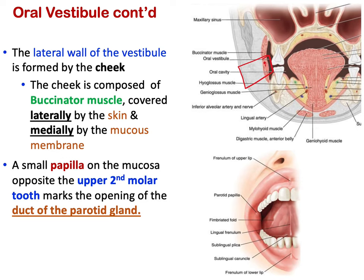In coronal section, the cheek is composed mainly of the buccinator muscle. The buccinator muscle is covered laterally by skin, but immediately internally it is lined by a mucous membrane, which reflects onto both the upper gum and the lower gum.